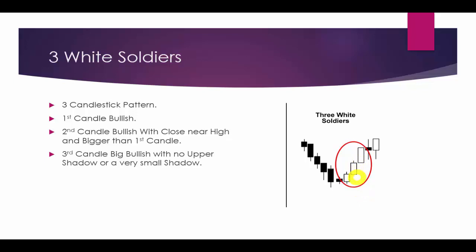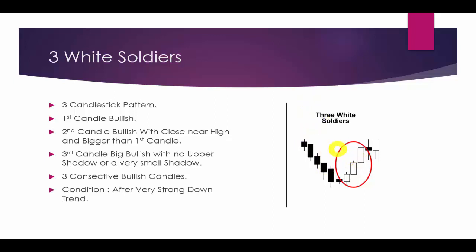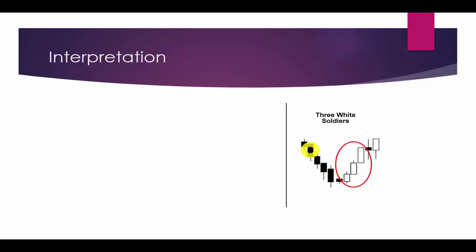To repeat all conditions: we will find this pattern after a strong downward trend. The first candle should be bullish, the second candle should also be bullish with its close near its high, and the third candle is a big bullish candle. All three are consecutive bullish candles following a very strong downward trend.